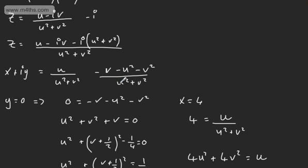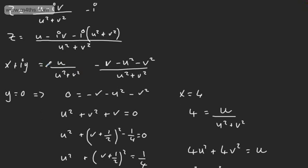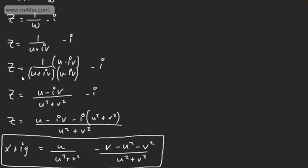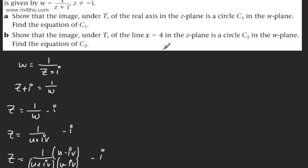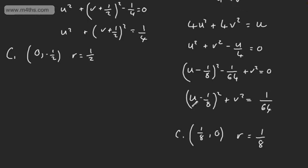I jumped into the second question based on the work done in the first. In an exam, just work through it fully. All we did was express Z in terms of X and Y, then split the fractions into real and imaginary parts. For part A, we set Y equal to 0 for the real axis; for part B, we set X equal to 4 for that line, then solved for each circle.